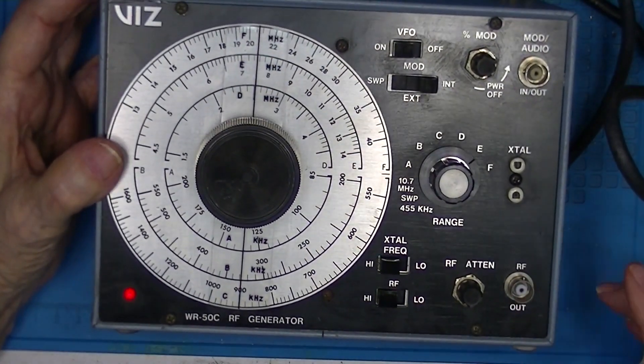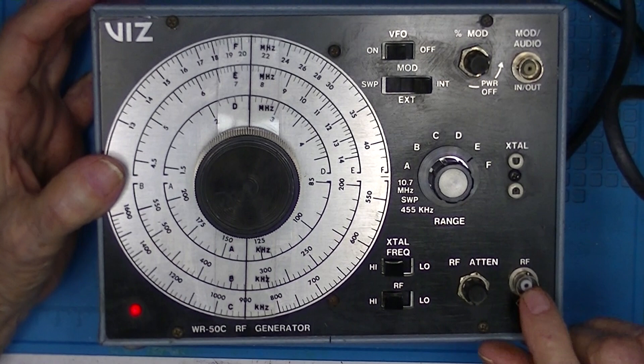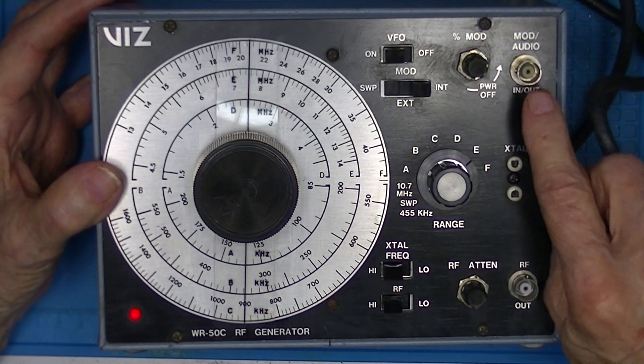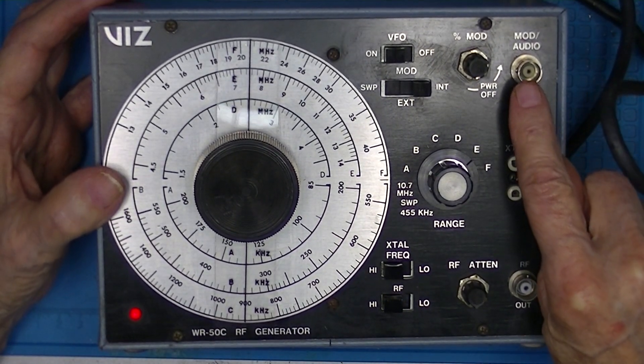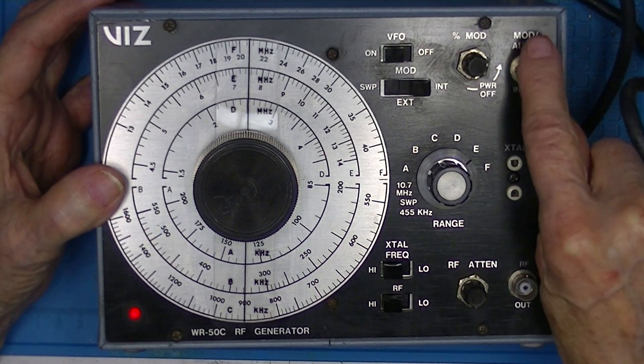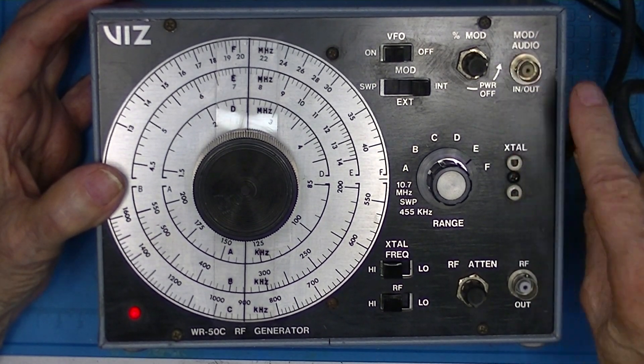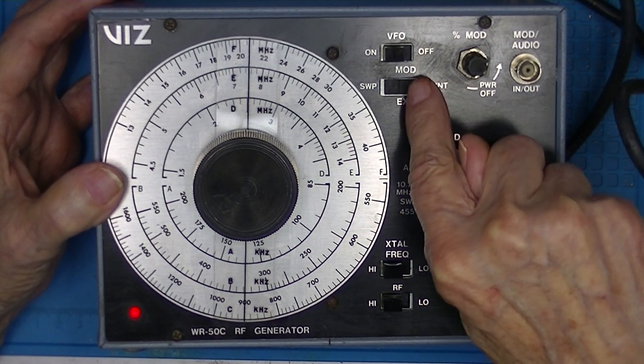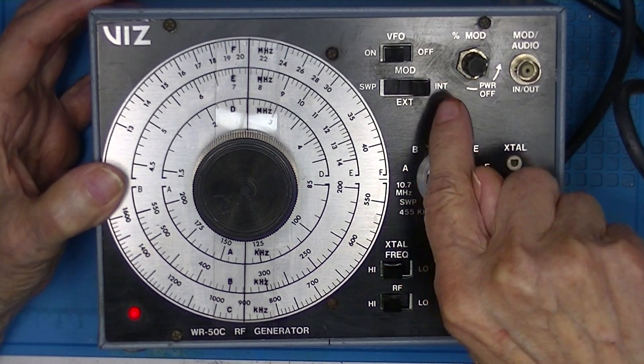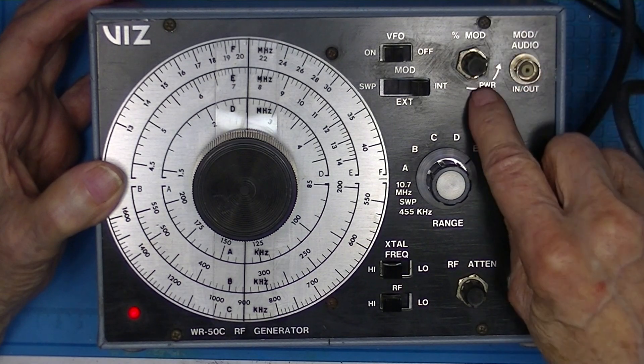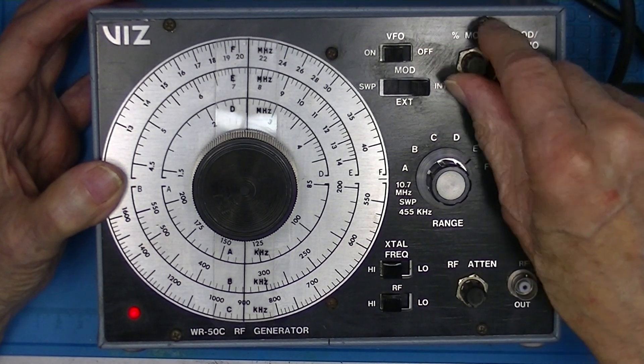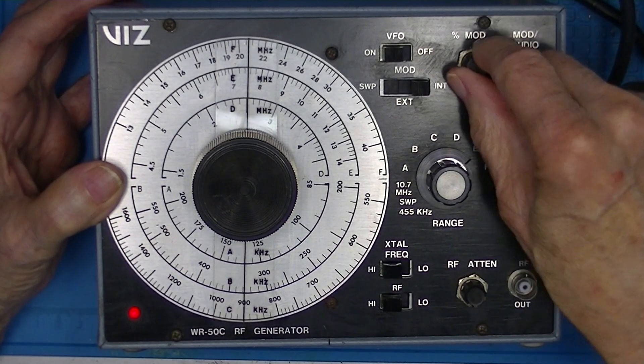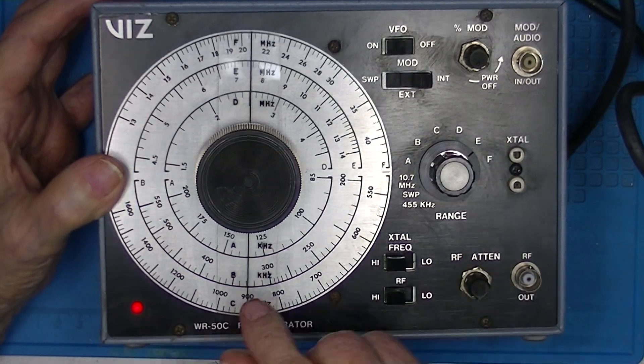We'll look at the RF output, obviously. This does output a 600 Hz audio signal as long as the switch is in the internal modulation position. And the level is set by this combination potentiometer and power switch. See, there's the light.